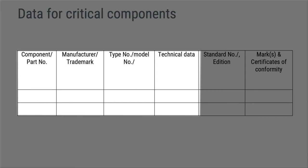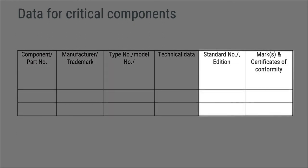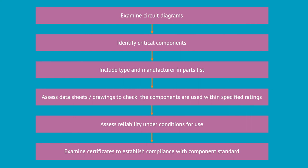For each critical component, you shall identify the part number, manufacturer, type number, and technical data in order to uniquely identify the component. You shall also identify which standards the component complies with and the reference number for the certificate of conformity or test report. Remember to check that the standard is suitable for the component and that a valid edition has been applied. Always check the certificates of conformity for every critical component and any limitations indicated on the certificates.